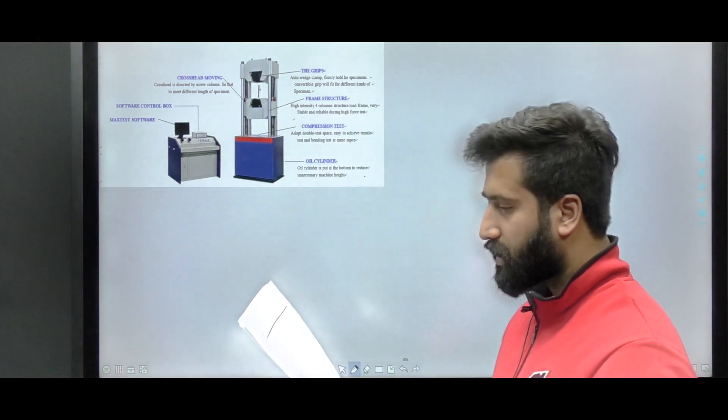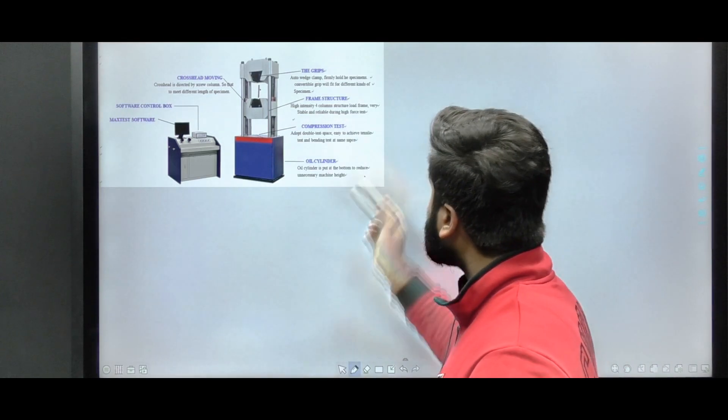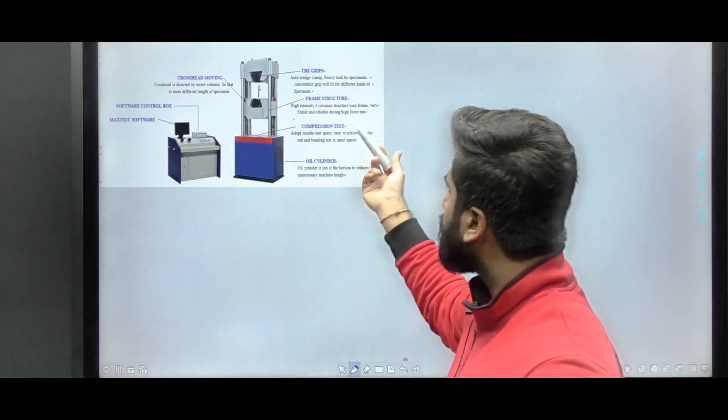The question is: in a UTM experiment, a sample of length 100 mm was loaded in tension until failure. The failure load was 40 kilo Newton. The displacement measured using the cross head motion at failure was 15 mm. The compliance of the UTM is constant and is given. The strain at failure in the sample is asked in percentage.